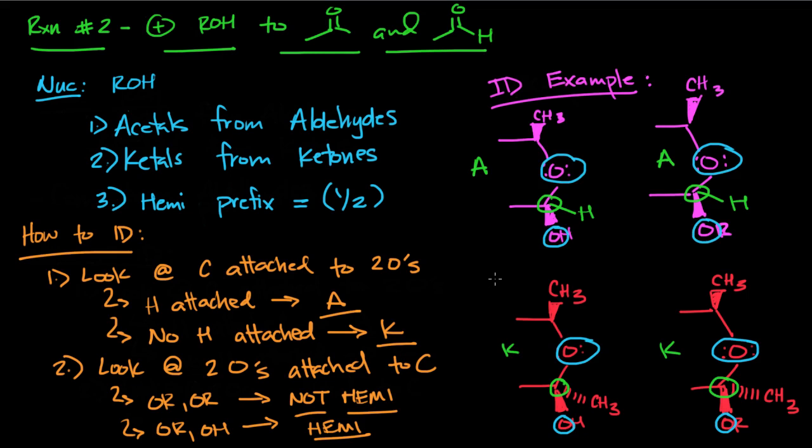So for example, first right here, top left, there's an OH and there's an OR. That means only one alcohol has attached to it, so it's half of an acetal—it's a hemiacetal. On the other hand, the second example in purple, there's an OR and then another OR. That means two alcohols have attached, so there's no need for the hemi prefix.